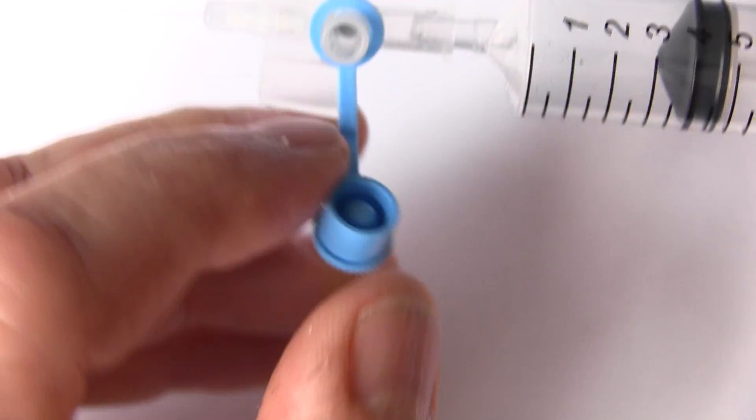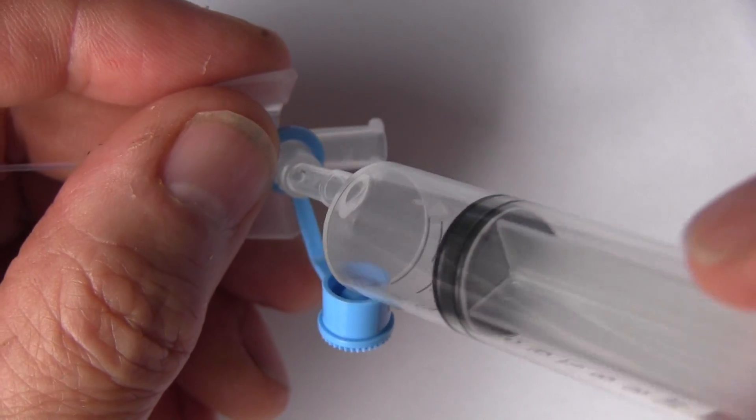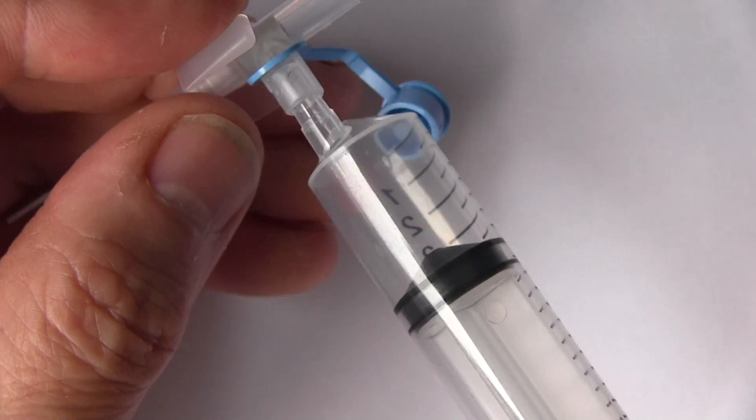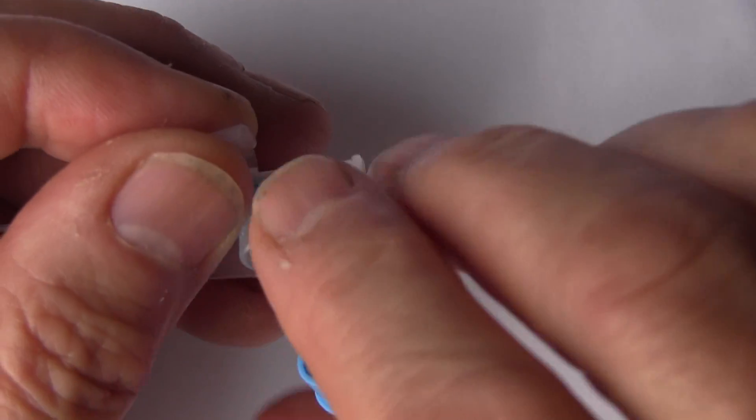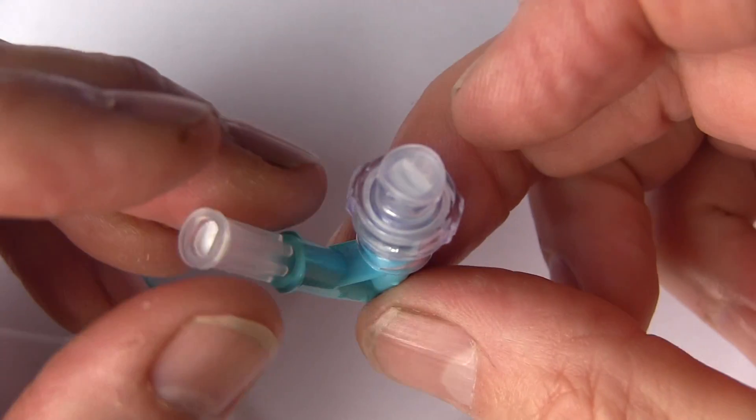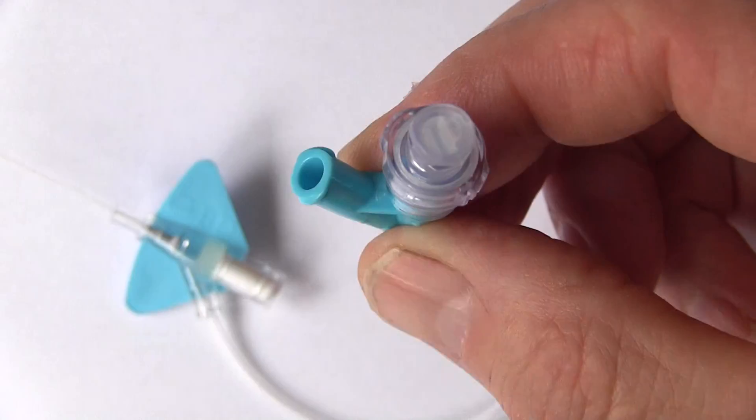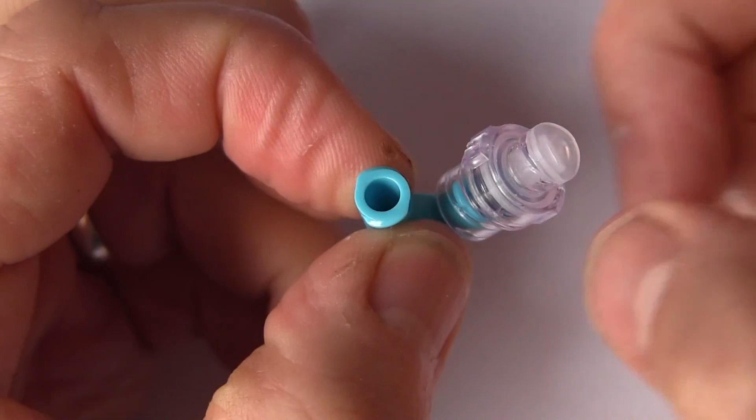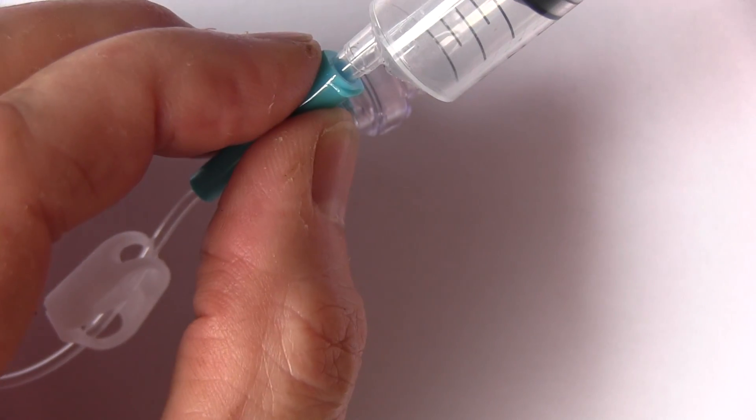Or alternatively, there's another giving port here, so we can take that off and we can put the drug into there. Again, nice fit. Or we've got another intravenous device here, and again we see this giving port. So we can take the tap off, the cork off, and we can fit the syringe into there quite nicely and give the drug.